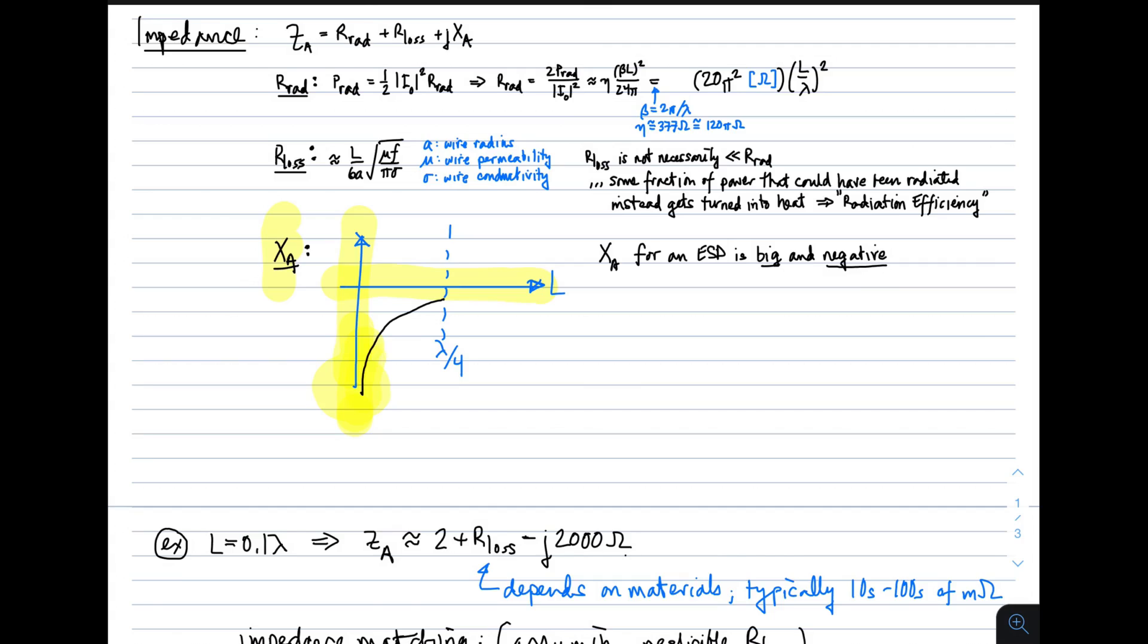So as length increases, something begins to happen. It starts heading towards positive territory. But in the electrically short dipole domain, we never really quite get there. Even for a dipole that's a quarter wavelength, we'll never quite get to the positive reactants territory. So what we see for electrically short dipoles is reactants in this ballpark.